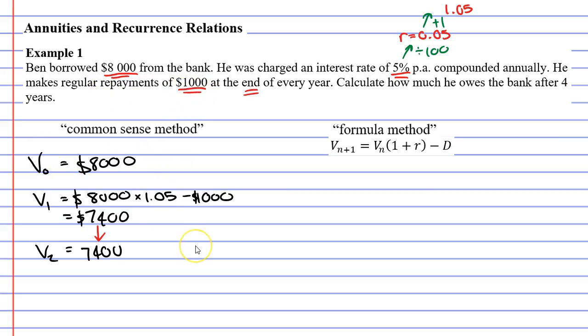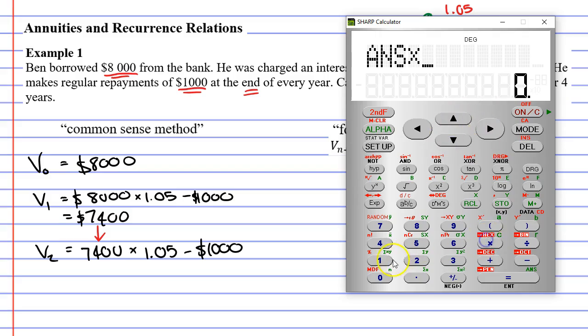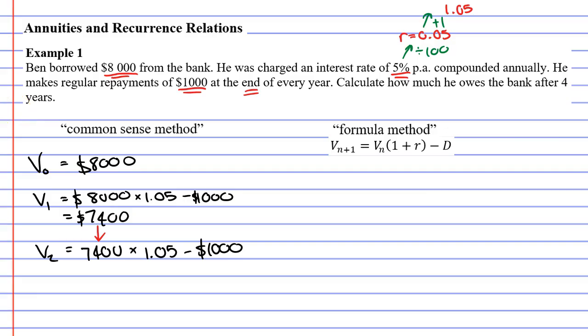Now, the rest of the calculations remain the same. To increase by 5%, we multiply by 1.05. To make our repayment, we subtract our $1,000. So we can see that everything stays the same in our calculations, except for the amount at the beginning. What are we going to get this time? 7,400 times 1.05 minus our $1,000 repayment. And it comes to $6,770.